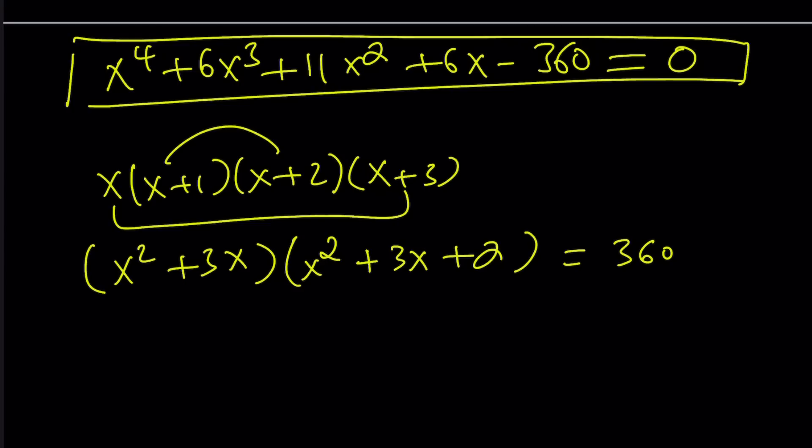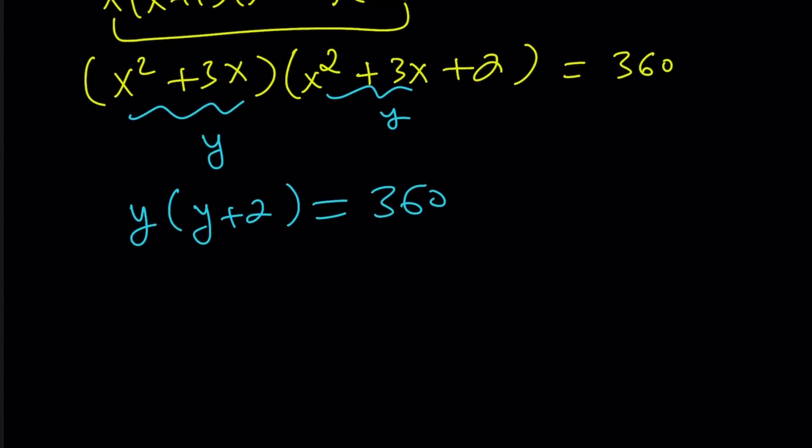I'm going to use substitution. This is equal to 360. We'll take care of that constant later. But here we said that if you call this y, this will be y plus 2. So now we have y times y plus 2 equals 360. This is nice. And again, for the solution of this equation, which is quadratic, there are two ways to go about it. I guess we could call this 1a and 1b.